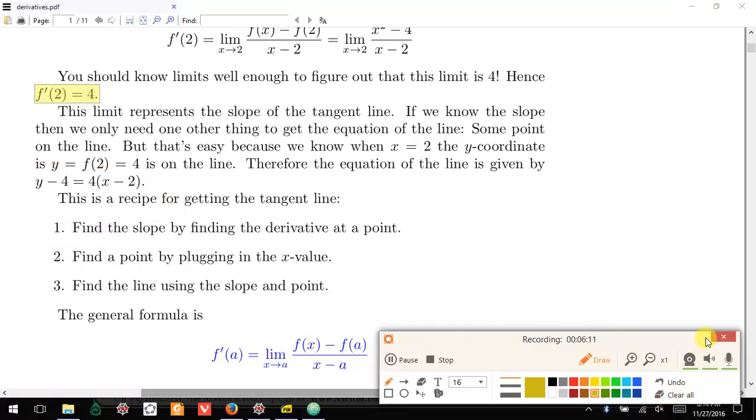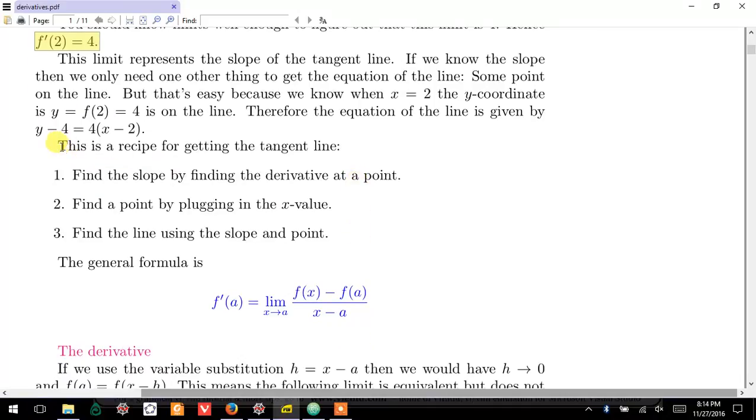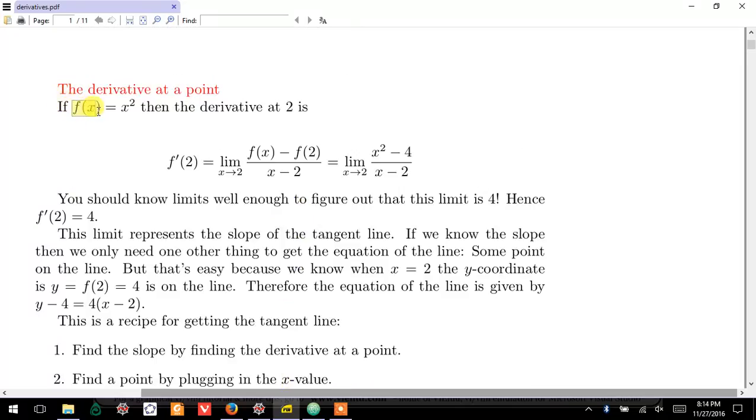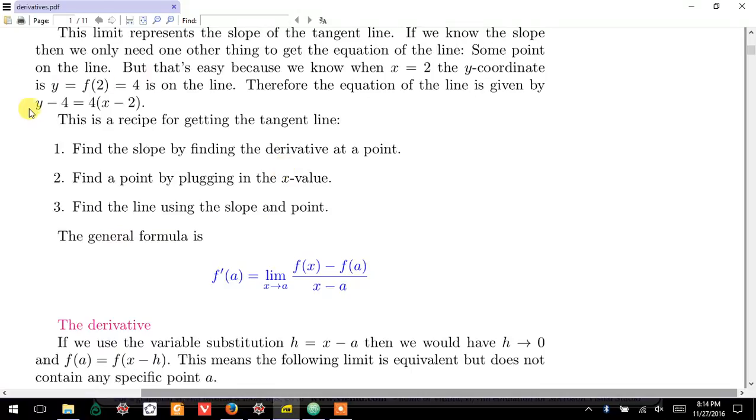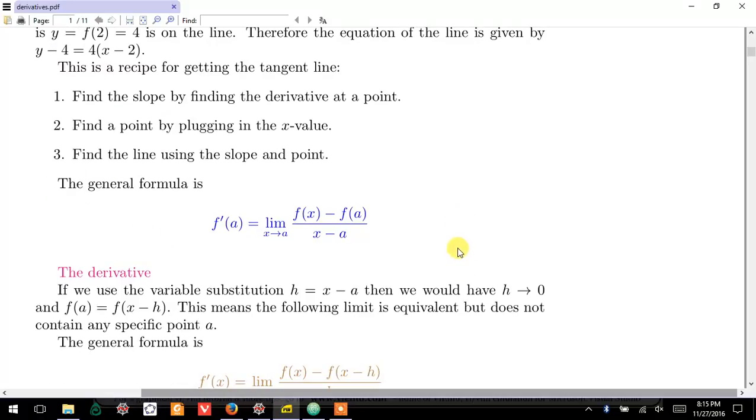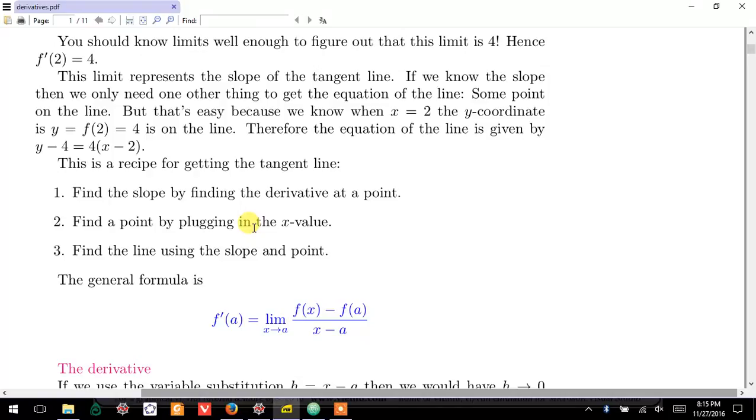So that's the derivative at a point and finding the tangent line from that information. This is a generic recipe for how you can always do that. How do you find the equation of the tangent line? You find the slope by finding the derivative at the point, you find a point on the line by evaluating the x value, plugging it into the original function, and then you put that information together in whatever way you like. You could do it by point-slope or there are other equations that will also do it, but you basically use that information to find the equation of the line.